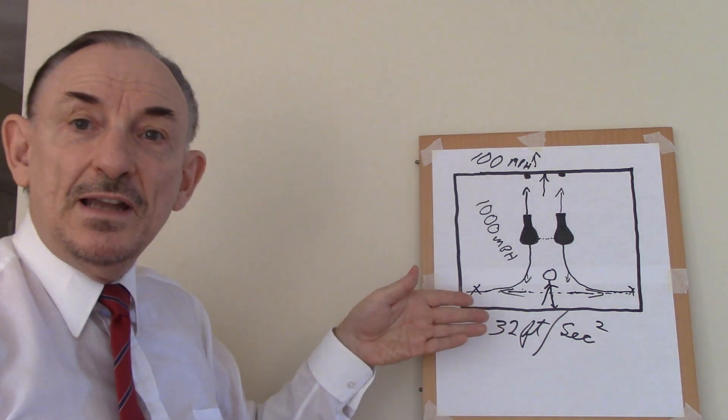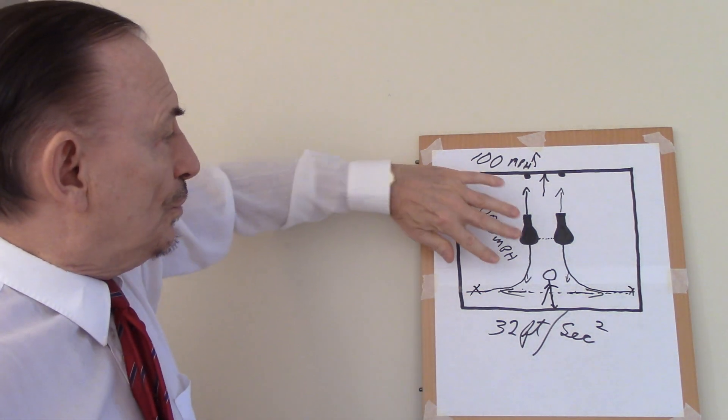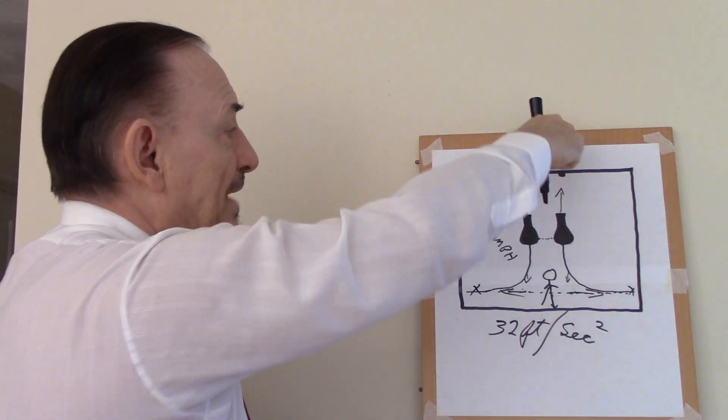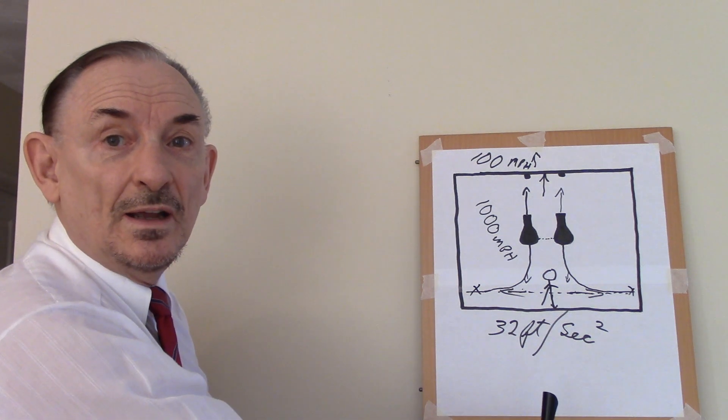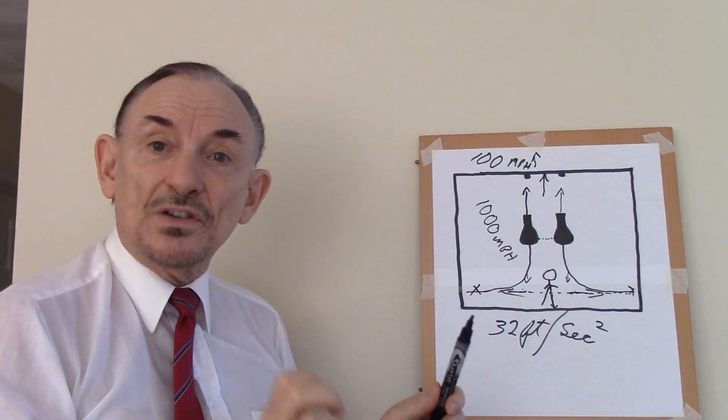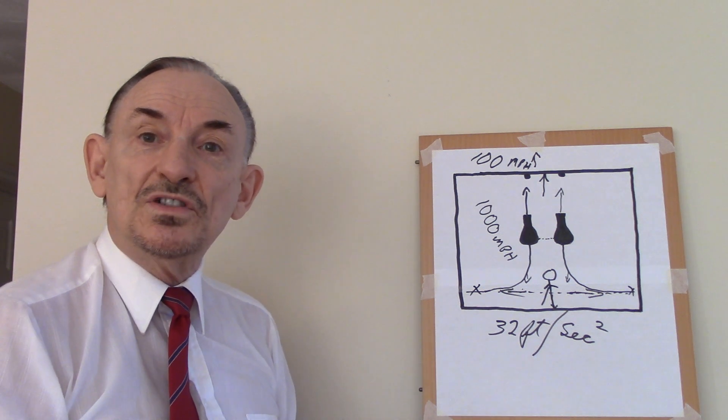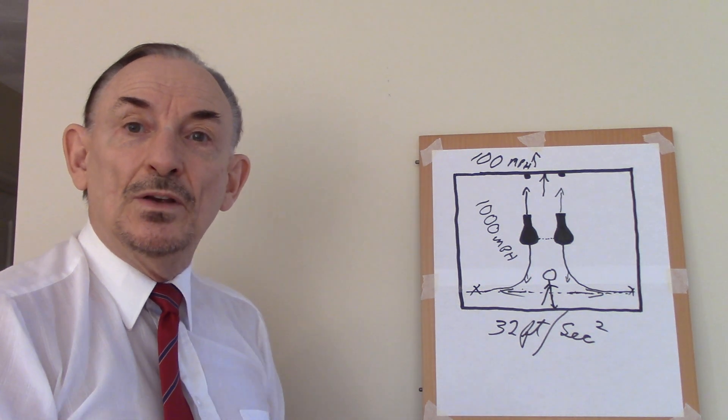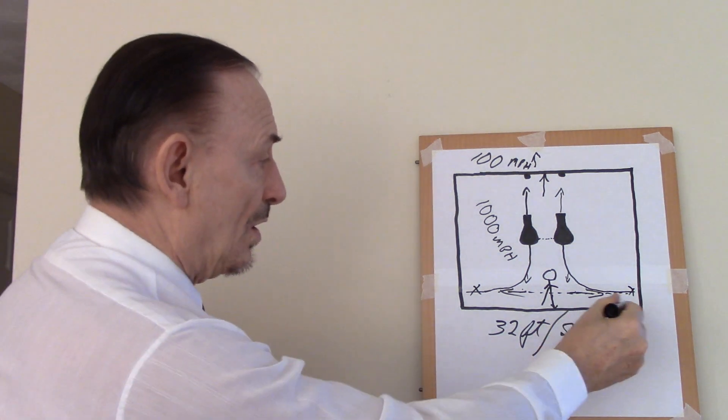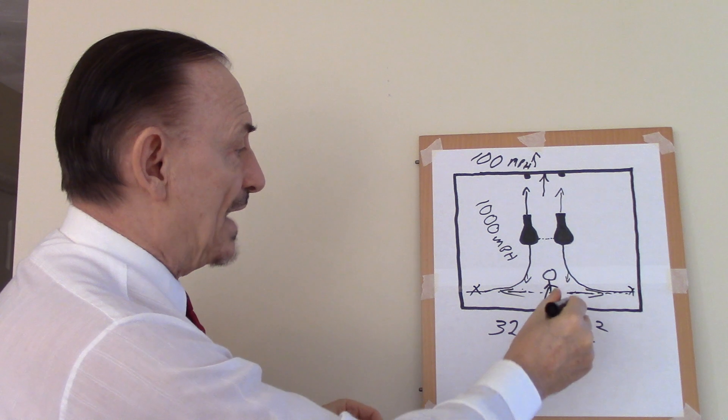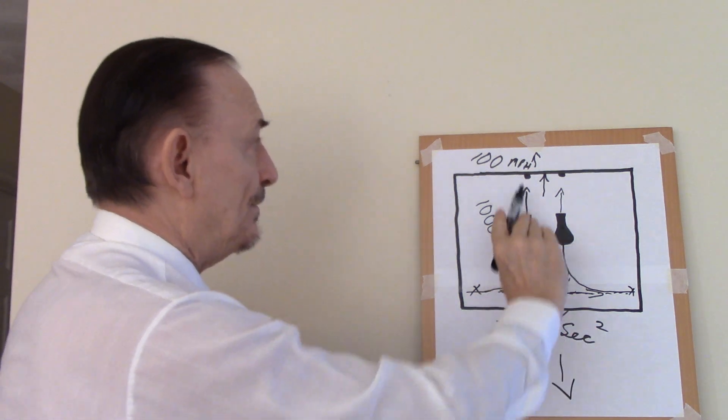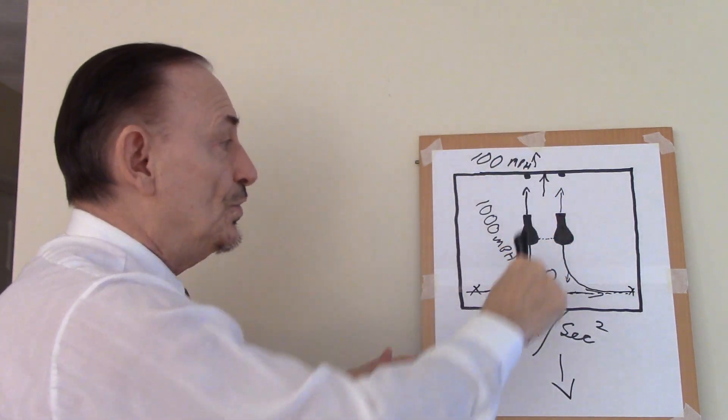Then when you get halfway to your destination, you turn the whole box around so that the cannons are now firing in that direction. And you reload them, start firing them again, and you start to decelerate. So then you have gravity on this wall, still this wall, but now it's moving in this direction instead of that direction, and you're decelerating.